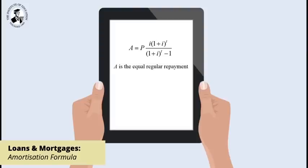A is the equal regular repayment. P is the loan advanced to the borrower. I is the rate of interest for the period, in this case one year. I must be in decimal form. And T is the number of repayments.